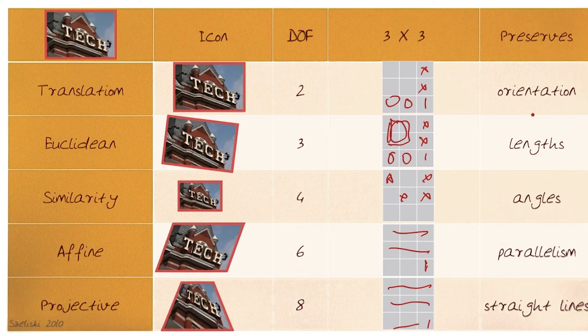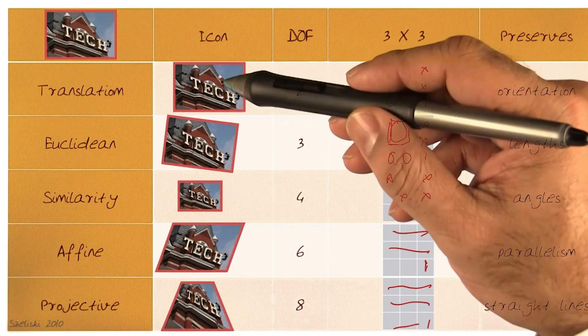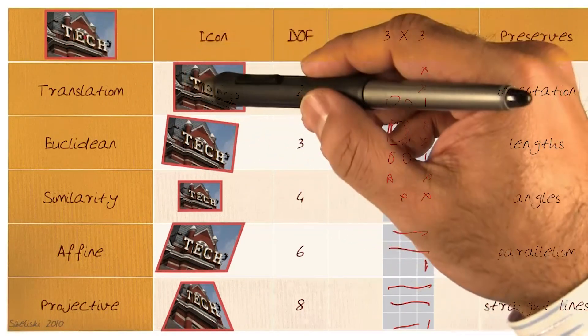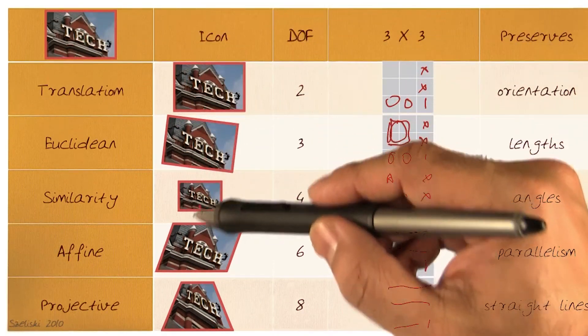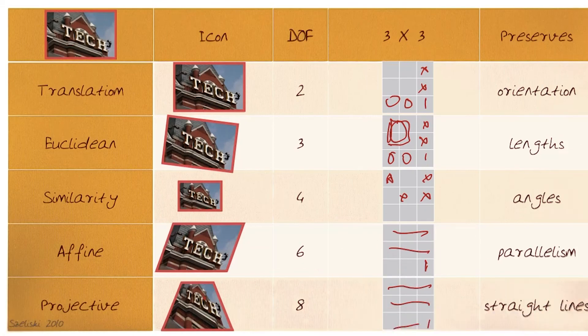And if you notice, this is how we can go through and look at different types of images from starting here. Looking at translation, rotation, scale, affine, and projective.